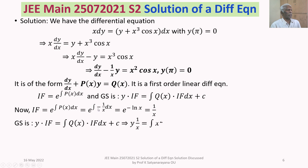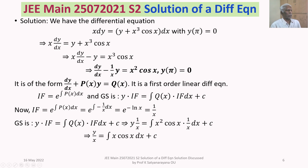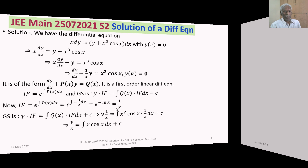The general solution is y times the integrating factor 1/x equals the integral of Q(x) times the integrating factor: ∫x² cos x · (1/x) dx plus c. The x terms cancel, leaving ∫x cos x dx plus c, so we have y/x equals ∫x cos x dx plus c. We continue on the next slide.